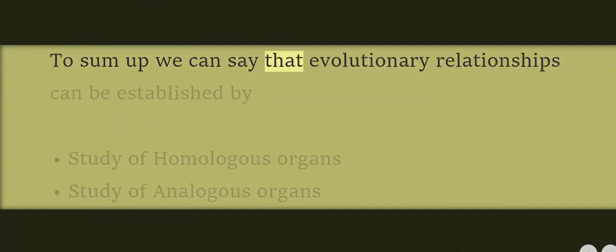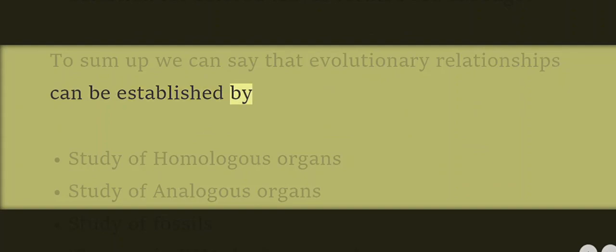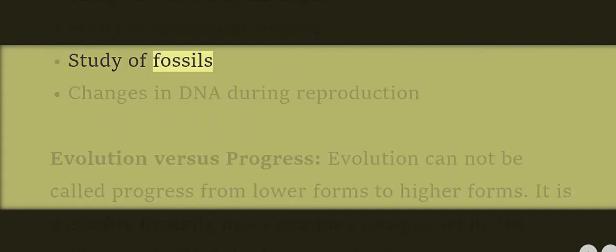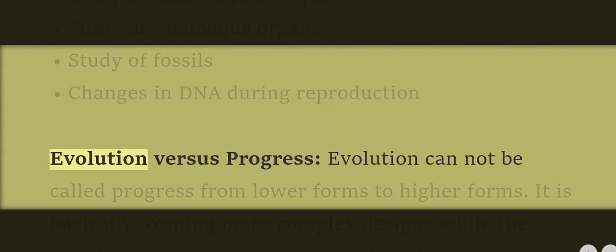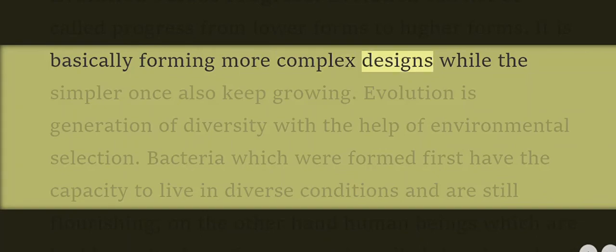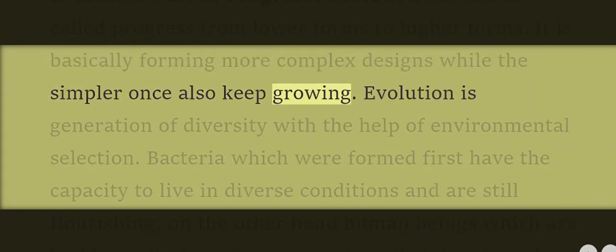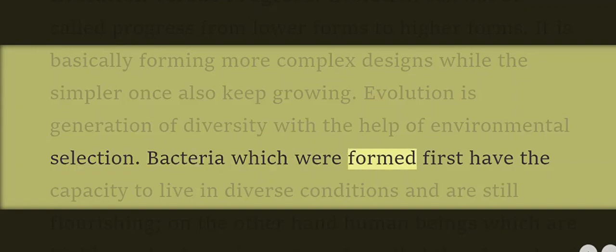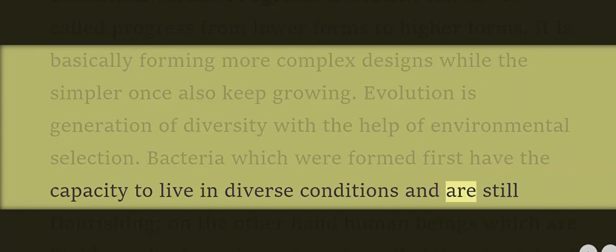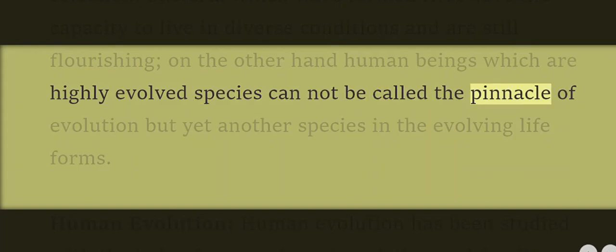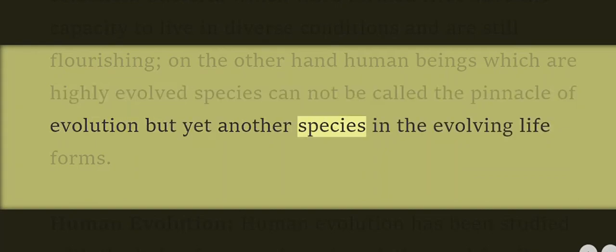To sum up, evolutionary relationships can be established by: study of homologous organs, study of analogous organs, study of fossils, and changes in DNA during reproduction. Evolution vs Progress: Evolution cannot be called progress from lower forms to higher forms — it is basically forming more complex designs while simpler ones also keep growing. Evolution is the generation of diversity with the help of environmental selection. Bacteria, formed first, still flourish in diverse conditions, while humans — though highly evolved — are yet another species in the evolving life forms, not the pinnacle of evolution.